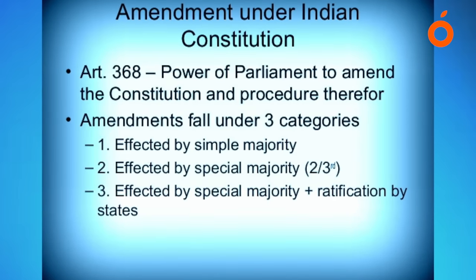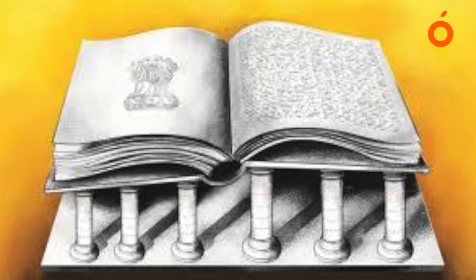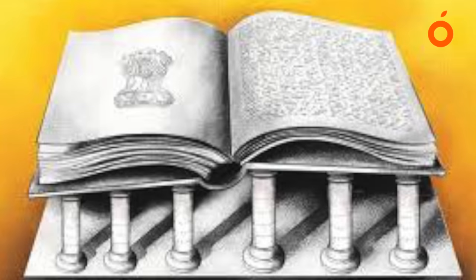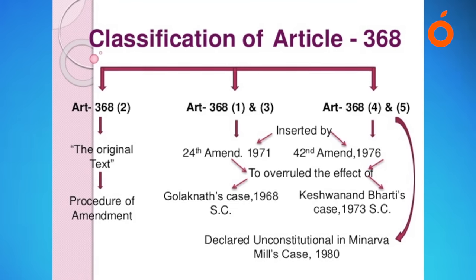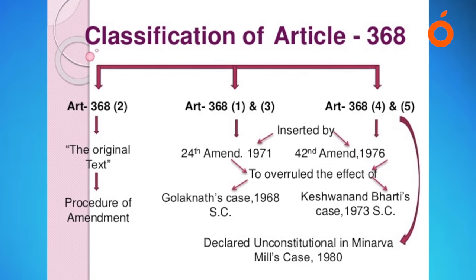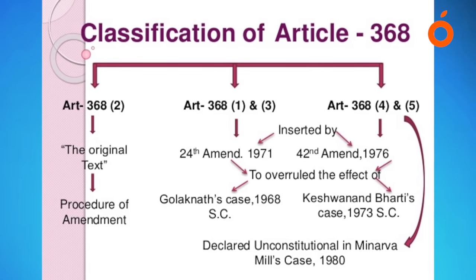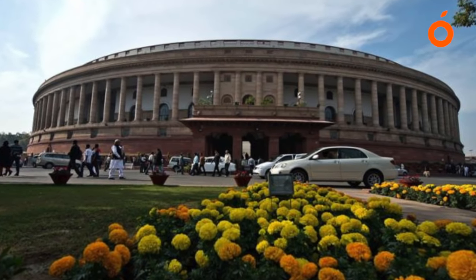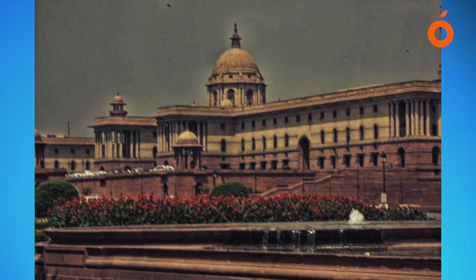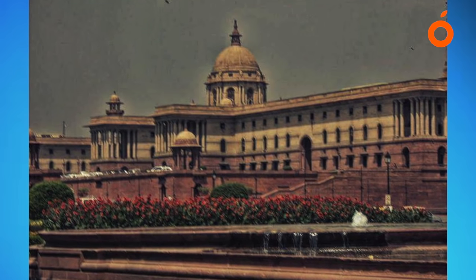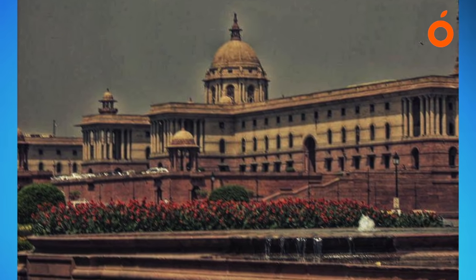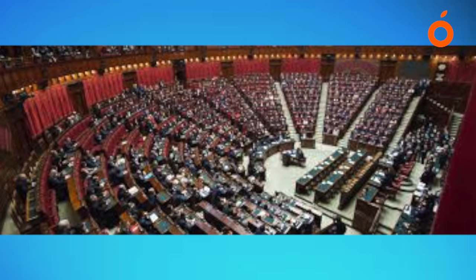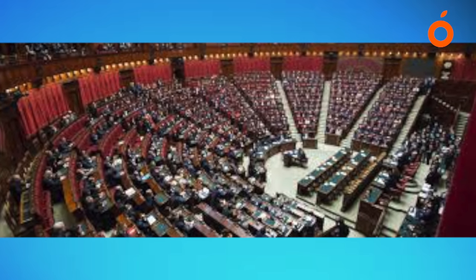As of May 2013, there have been 97 amendments to the constitution of India since it was first enacted in 1950. The 97th Amendment Act amended Article 19 and added Part 9B, which came into force on 12 January 2012.